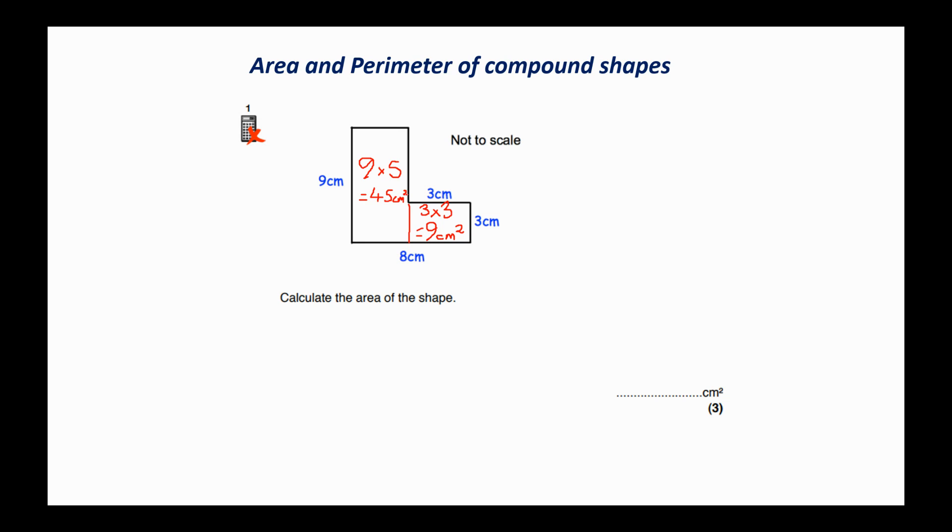So our total area will be 45 plus 9 which is going to be 54 cm squared.